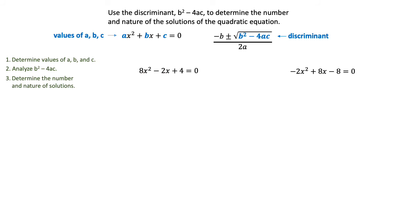Let's look at two more examples of what might happen with the discriminant. In this third example, a is 8, b is -2, and c is 4. When you plug those values into b² - 4ac, you get -124.